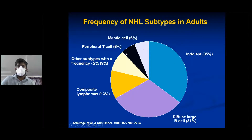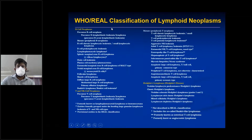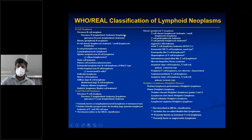The frequency of NHL subtypes in adults: the most common are indolent types, followed by diffuse large B-cell lymphoma which is aggressive, then mantle cell, peripheral T-cell, and other subtypes under 2%. You need to know which subtypes are indolent, which are aggressive, and which are very aggressive.